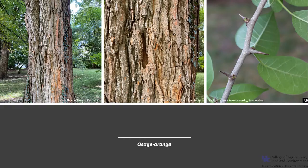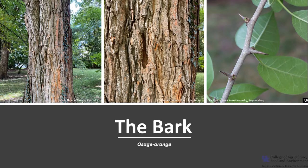The bark is orange-brown and develops scaly thick ridges with irregular furrows. The twigs are usually armed with stout unbranched thorns located at each leaf scar, and the twigs also exude a milky sap when cut.